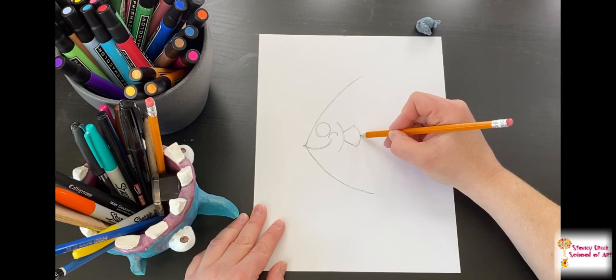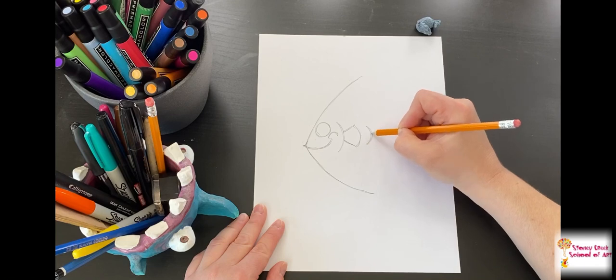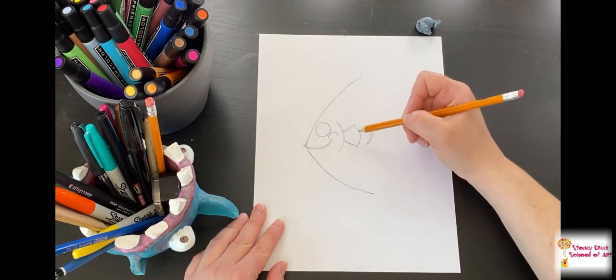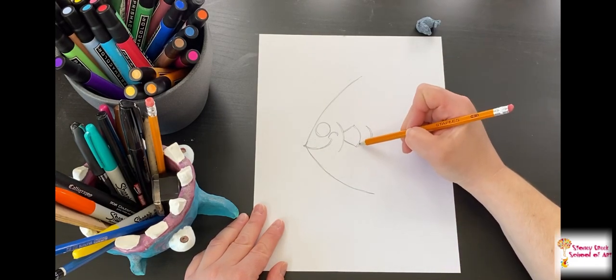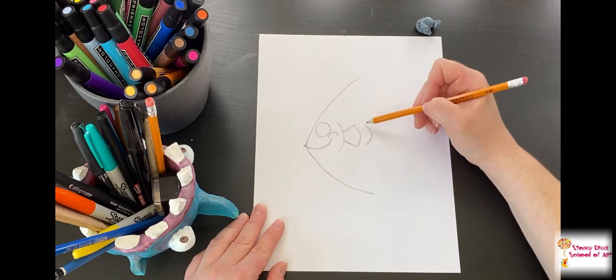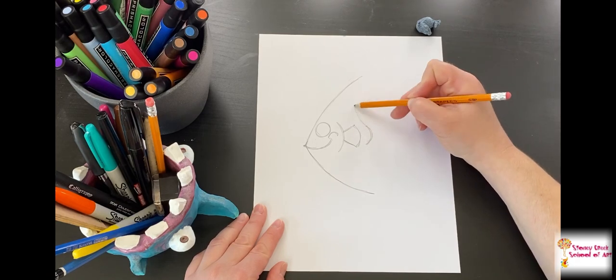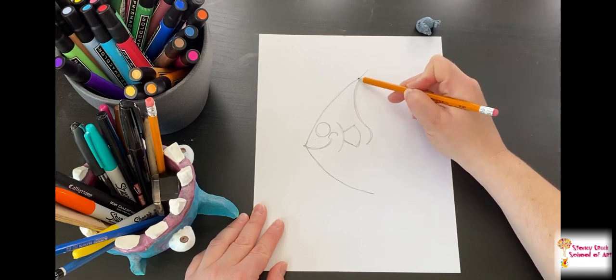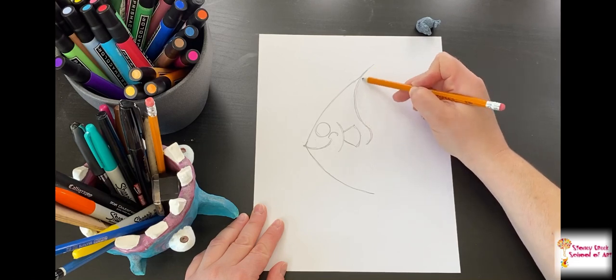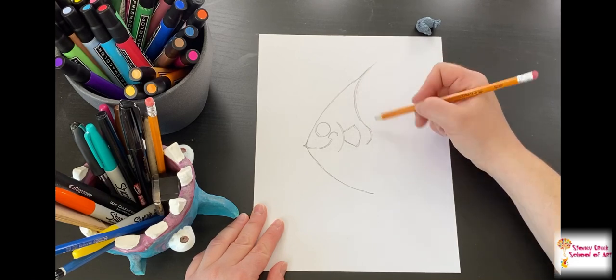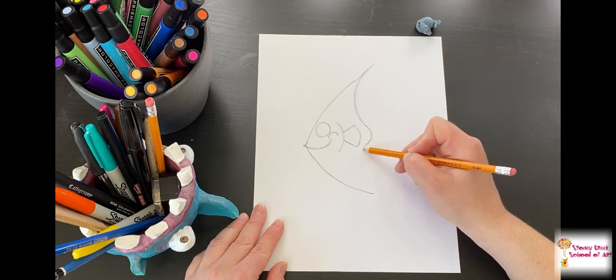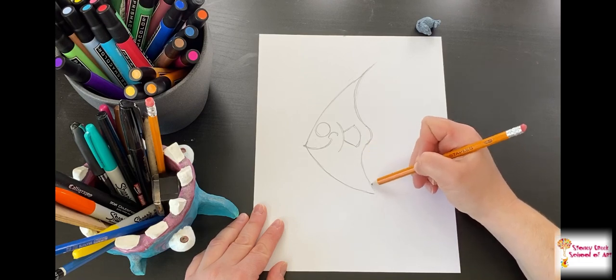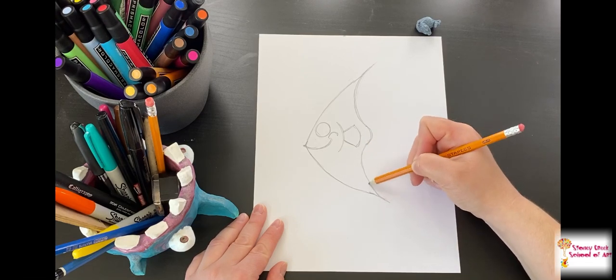Now we're going to end his body. I'm doing another little curve, mimicking this curve on the fin. From this point, I'm going up in a curve to meet that top. I can extend it—some angelfish have really long fins like that. Then I'm going to do something similar to the bottom.